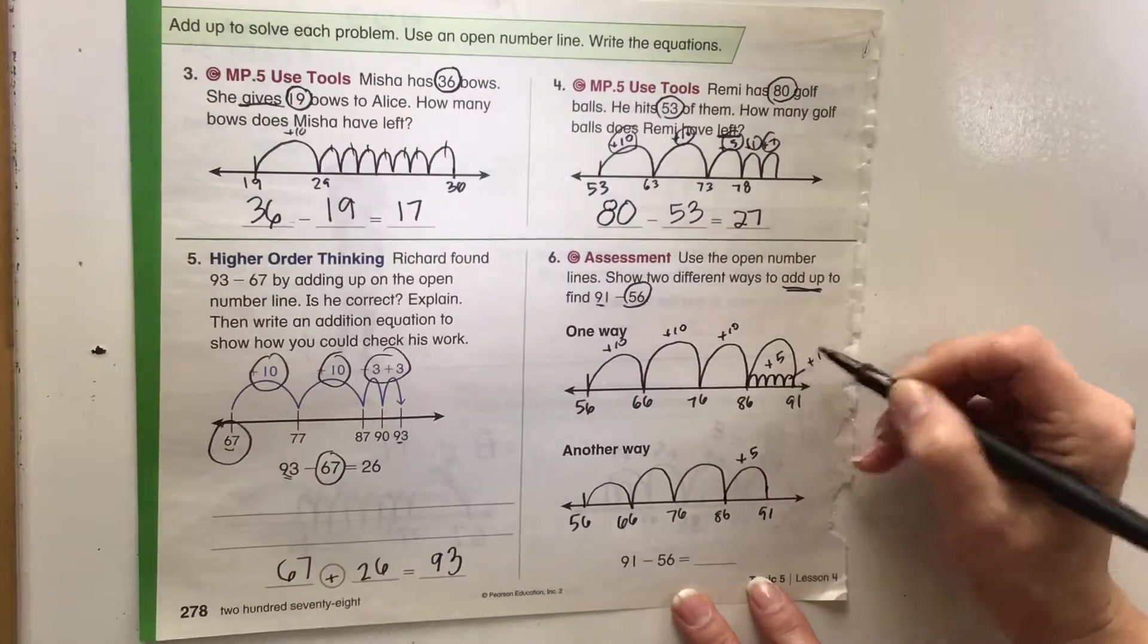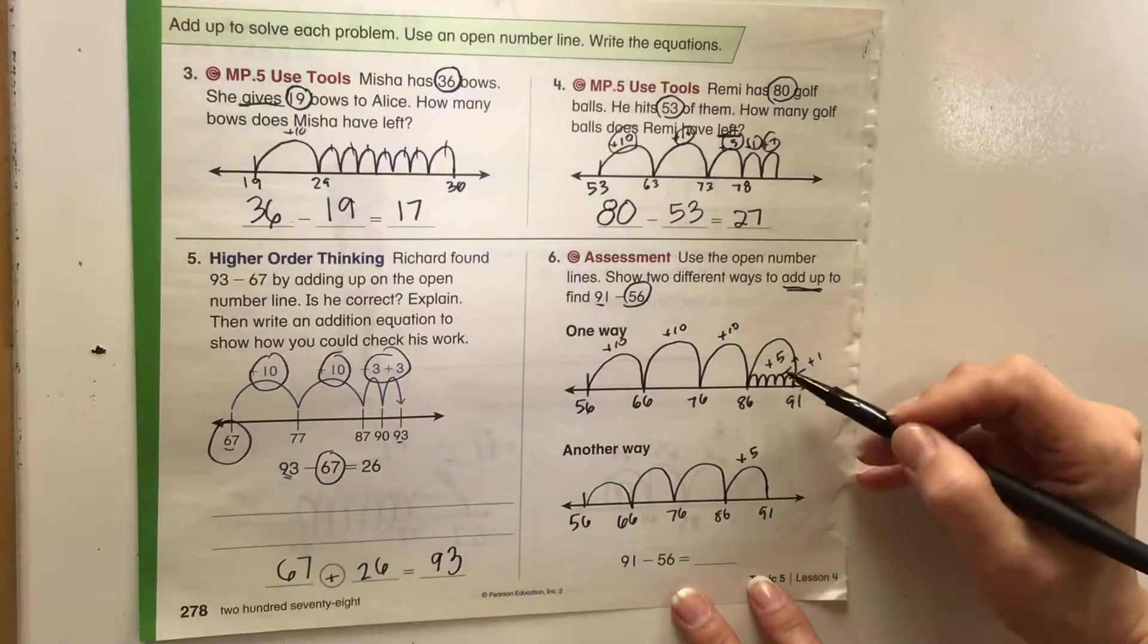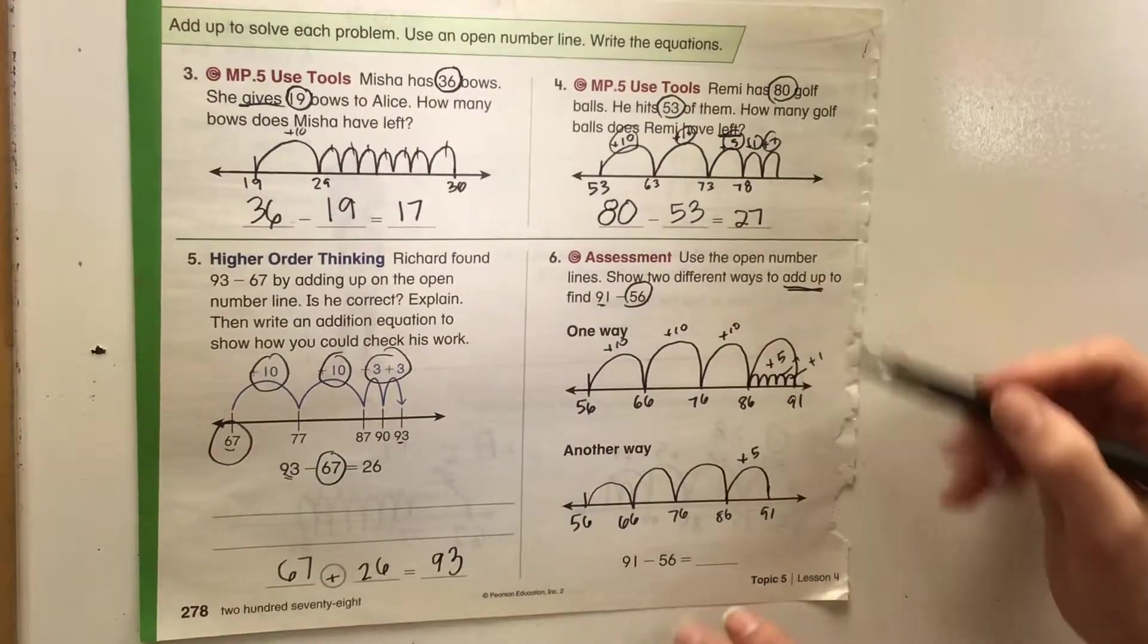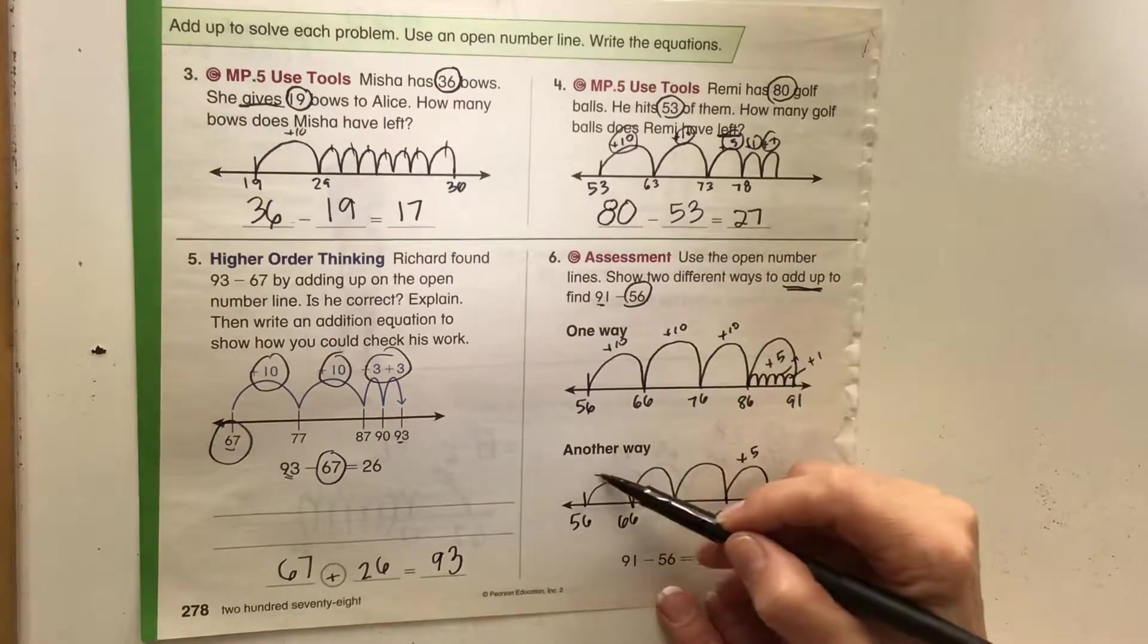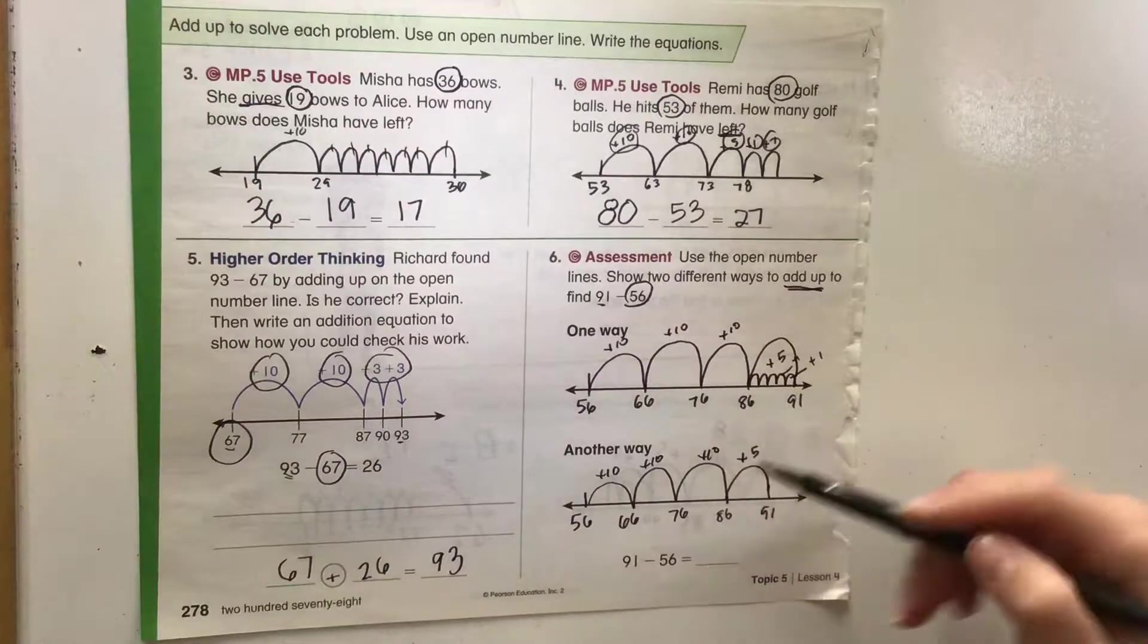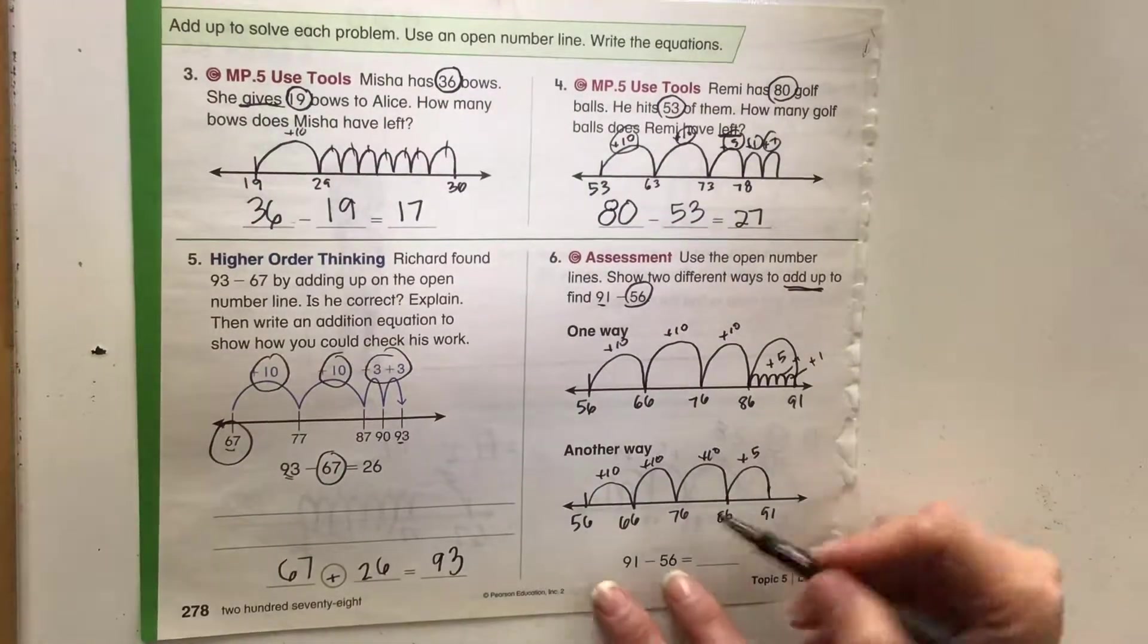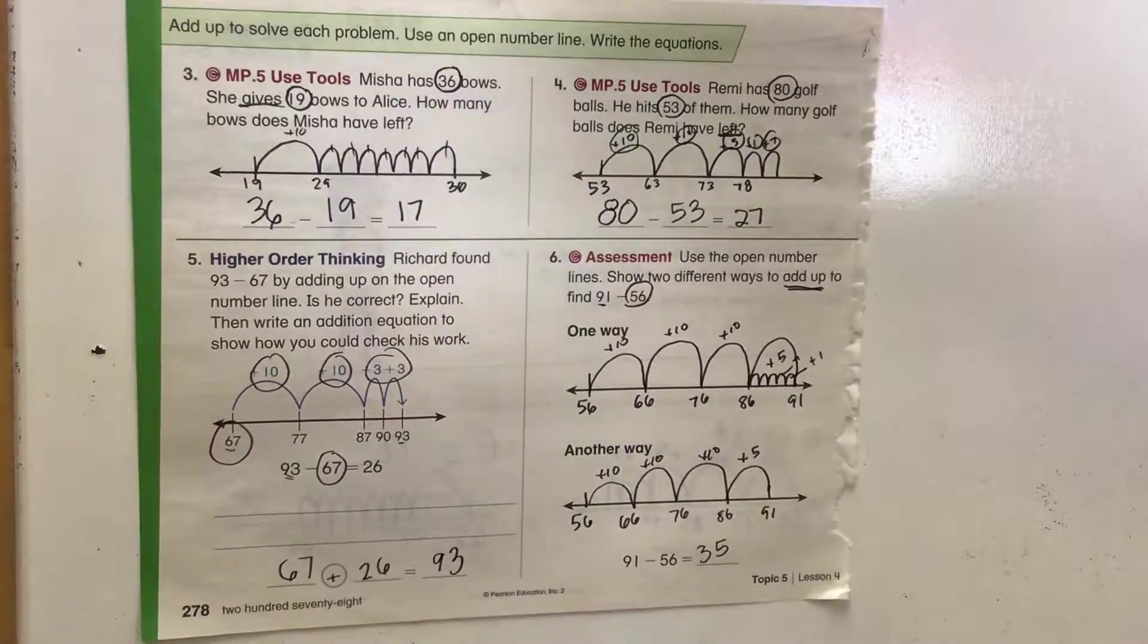So instead of all these individual plus one, plus ones, we can see that if we put five of those plus ones together, we can do it as a plus five. And we take a look at how many we have. So this is plus 10, plus 10, plus 10, and five. So we need to figure out how many that is: 10, 20, 35. 35 is our difference on that one.